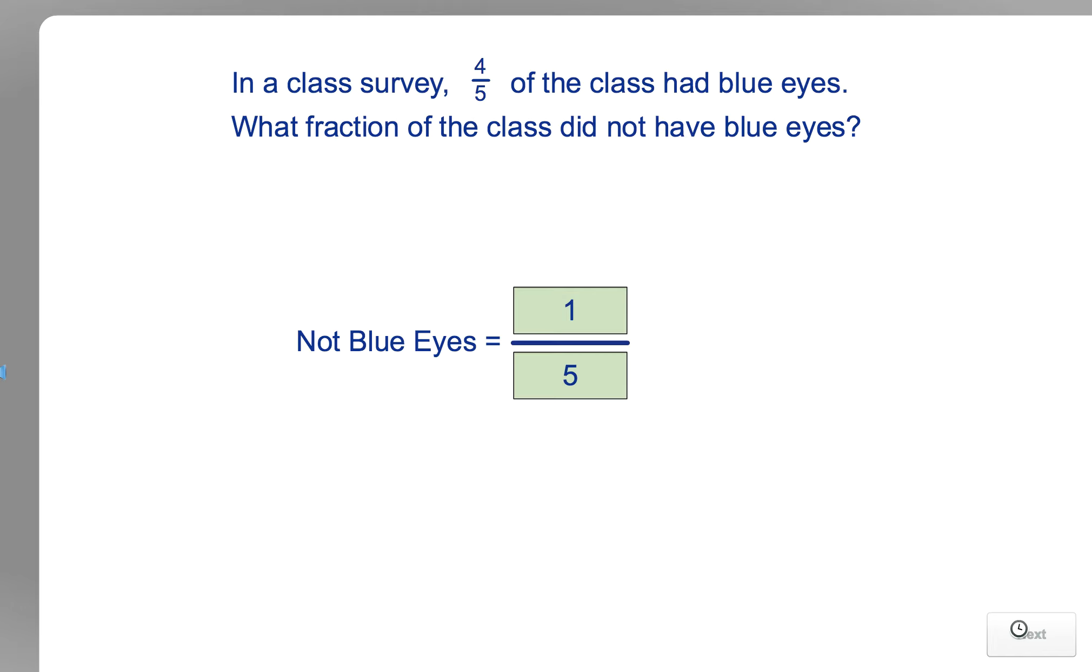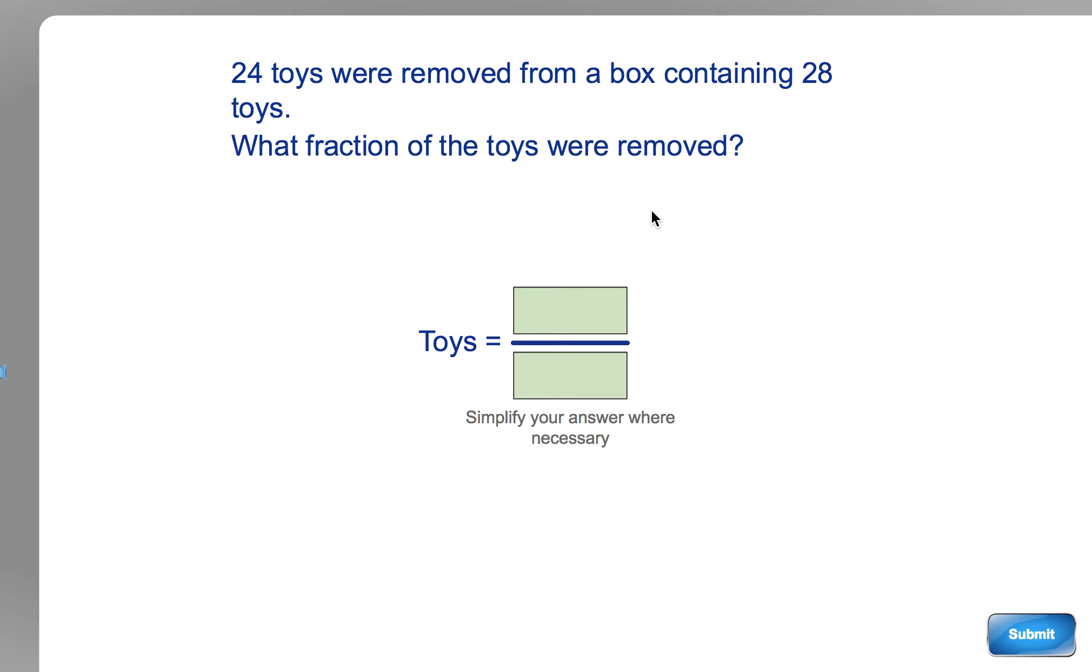This one talks about 24 toys being removed from a box containing 28 toys. What fraction were removed? So you need to find a factor that you can divide 24 and 28 by. The fraction of toys removed is 24 out of 28, isn't it?